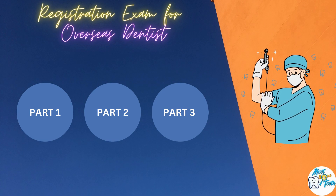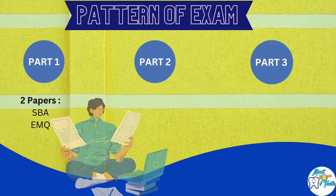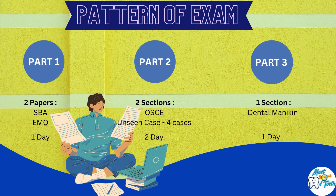Coming to the LDS exam, it includes three parts. Part 1 is a theory-based exam. It includes two papers: single best answer questions and extended matching questions. Each paper lasts for about 150 minutes. You need to pass both papers in order to progress to Part 2, and this part is held in a single day.